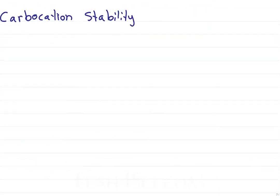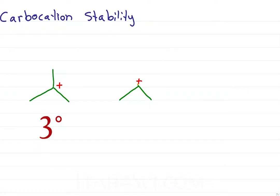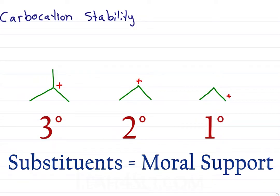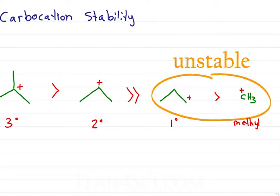Let's quickly review carbocation stability using the pencil trick taught in this video. We identify this as a tertiary carbocation because the carbocation has three lines coming out of it to other carbons. The secondary carbocation only has two, and the primary carbocation has just one. Having substituents on a carbocation is like providing moral support that helps stabilize the positive charge, and so the tertiary carbocation is more stable than the secondary, which is more stable than the primary, and that would be more stable than a methyl carbocation. In fact, primary and methyl carbocations are so unstable, you'll rarely see them in reactions.